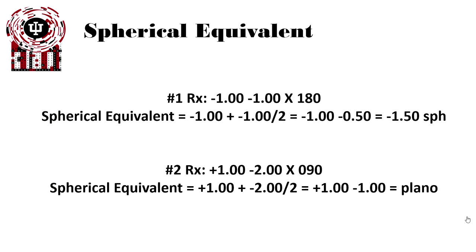In the second example, we have a plus 1 minus 2 at 90. The spherical equivalent is calculated by plus 1 plus half of the minus 2 cylinder, or plus 1 minus 1, which gets plano. There's no prescription in this spherical equivalent.